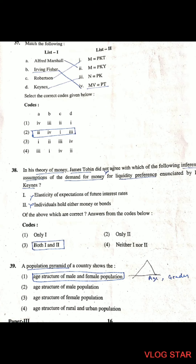Question 39: A population pyramid of a country shows the age structure of male and female population. In the population pyramid, the two things shown are age and gender — male and female. So this statement is correct.